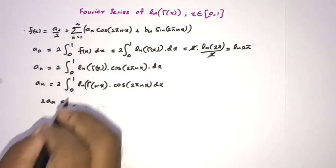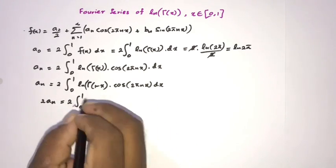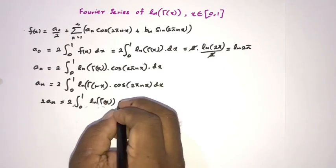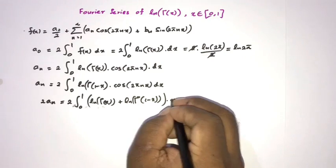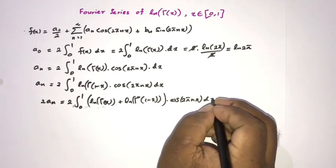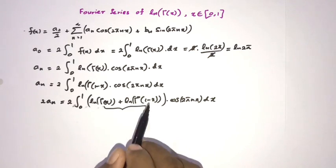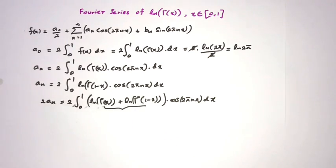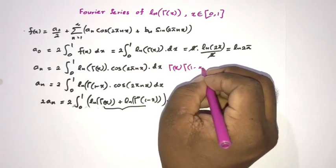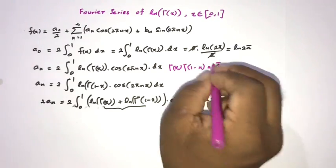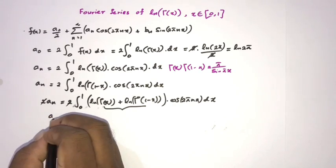Since cos(2πn(1−x)) = cos(2πnx), this is also equal to aₙ. Adding the two expressions, 2aₙ = 2∫₀¹ [ln(Γ(x)) + ln(Γ(1−x))]·cos(2πnx) dx. By the log property, the sum inside becomes ln(Γ(x)·Γ(1−x)) = ln(π/sin(πx)) by Euler's reflection formula.